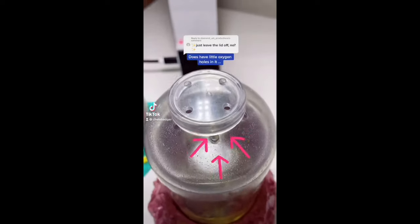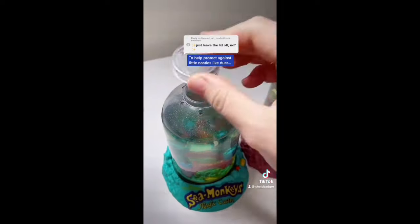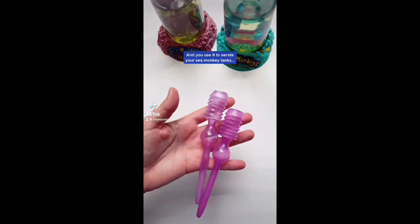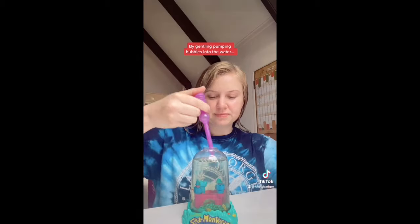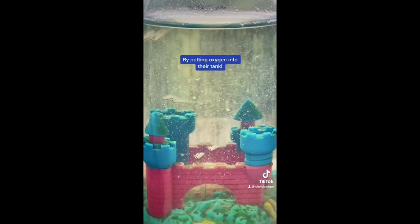The lid in your sea monkey tank does have little oxygen holes in it. However, it's best to keep the lid on to help protect against little nasties like dust from ending up in your sea monkey tank. This is the sea monkeys bubbler tool and you use it to aerate your sea monkey tanks by gently pumping bubbles into the water. It doesn't hurt them, it actually helps them live longer by putting oxygen into their tank.